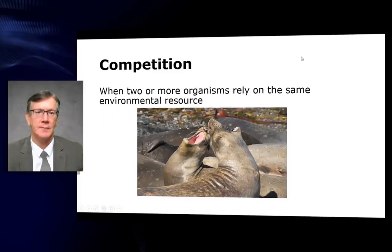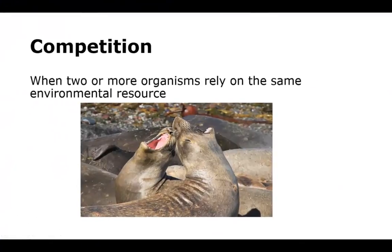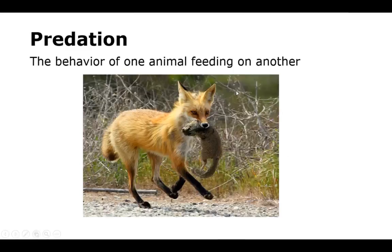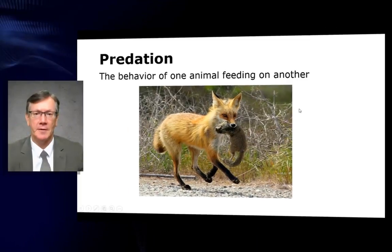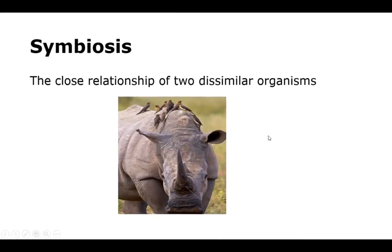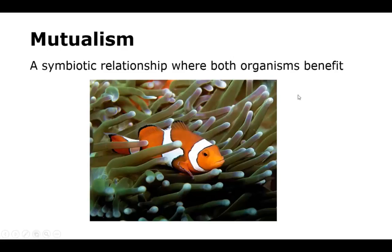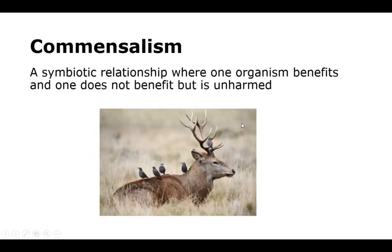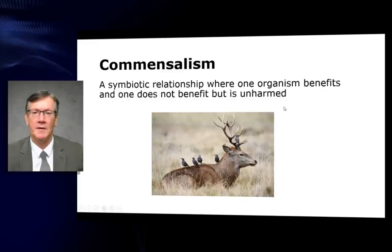Community interactions. Competition occurs when two or more organisms rely on the same environmental resource — in this example, seals compete for a mate. Predation is the behavior of one animal feeding on another. Symbiotic relationships: symbiosis is the close relationship of two dissimilar species. Mutualism is a symbiotic relationship where both organisms benefit — for example, a clownfish and an anemone, where the clownfish has a safe place to live and removes particles from the anemone, keeping the area clean. Commensalism is a symbiotic relationship where one organism benefits and one does not benefit but is unharmed.